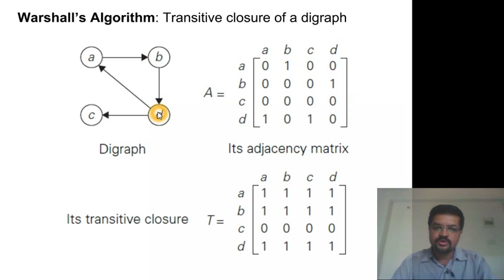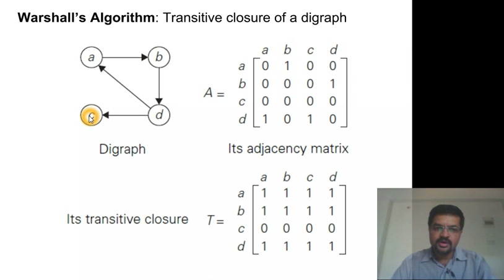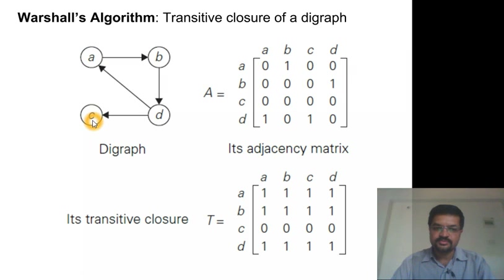In this case, there is no edge from D to B, but there is a path from D to B via A, because there is an edge from D to A and an edge from A to B. Similarly, suppose there is no direct path from A to C, but there is a path from A to D via B, and there is a path from D to C. Therefore, with transitivity, we have a path from A to C.